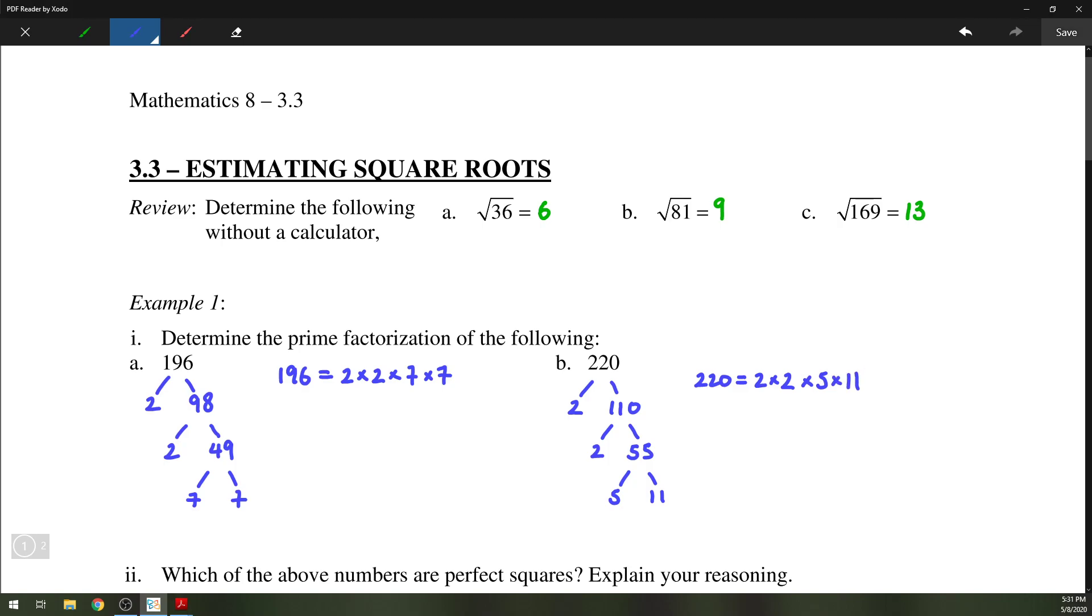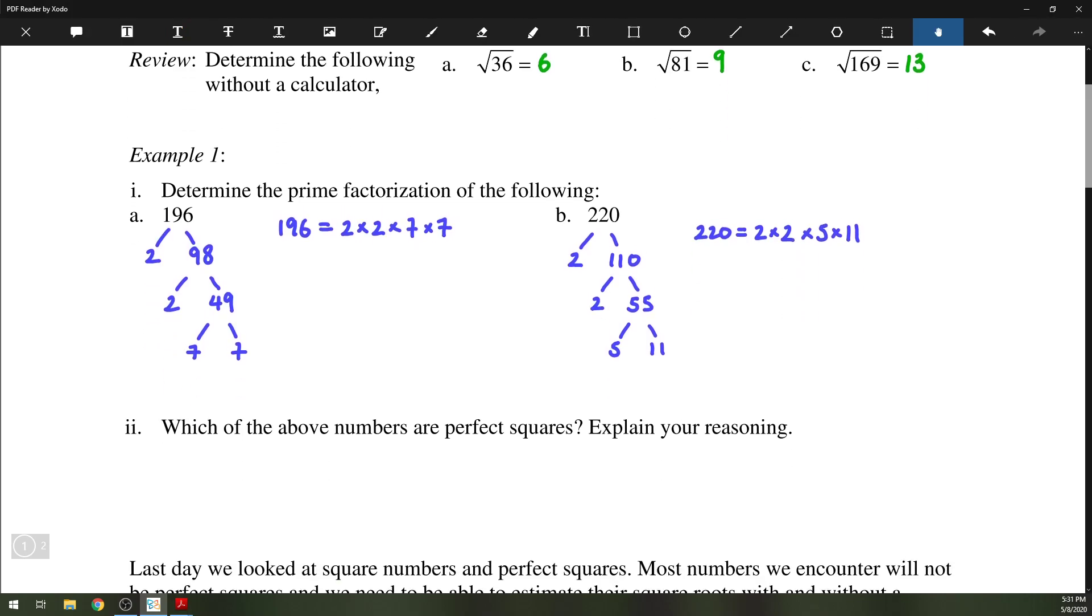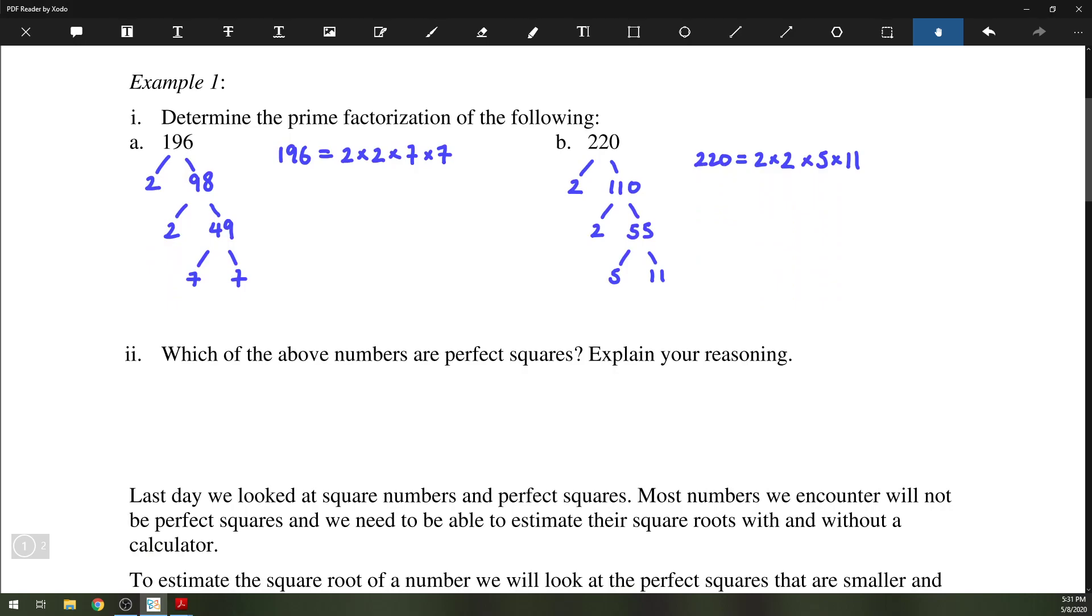What we talked about last day is that for a number to be a perfect square, it needs to have an even number of each prime factor. So if you look at these two numbers above, 196 would be the perfect square, with an even number of each prime factor.